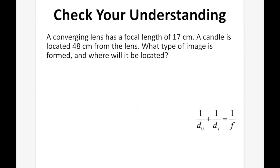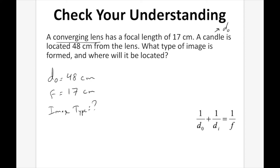Check your understanding. A converging lens has a focal length of 17 cm. A candle is located 48 cm from the lens. What type of image is formed, and where will it be located? DO equals 48 — always positive. It's a converging lens, so the focal length is positive 17. We need to find the type of image and DI. Pause the video and answer this question.